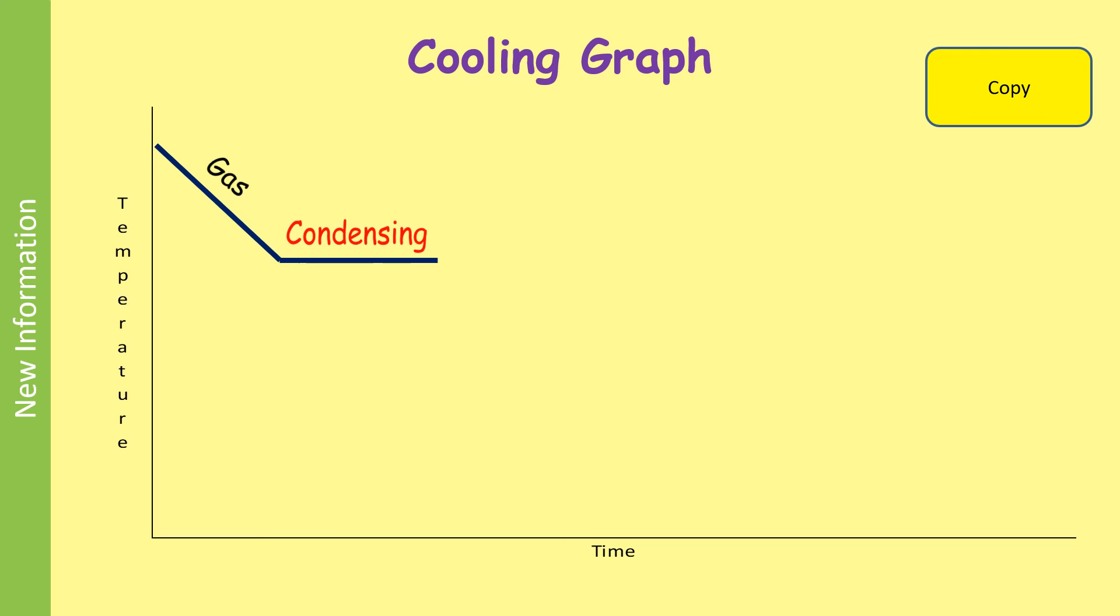That energy maintains the temperature at that point for a little while. If you carry on removing energy, eventually the liquid will turn into a solid. And we call that freezing. And again, there's a flat part of the graph here.